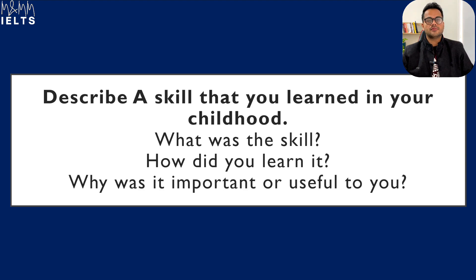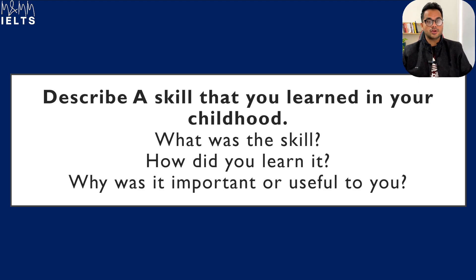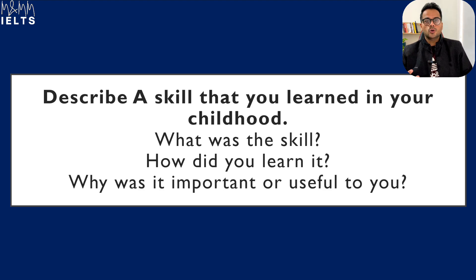The question says: 'Describe a skill that you learned in your childhood.' It has three sub-questions: first, what was the skill; second, how did you learn it — was it accidental or intentional, and who helped you; and third, why was it important or useful for you.